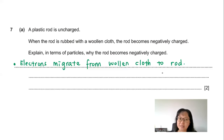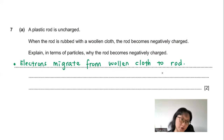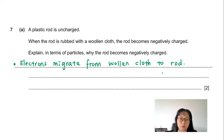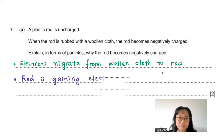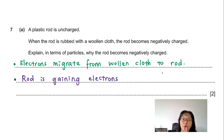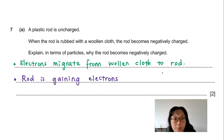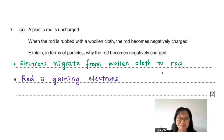Initially, the plastic rod and the cloth have equal numbers of positive and negative charges. When rubbing occurs, some electrons from the woolen cloth move to the rod. As a result, the rod gains more electrons than positive charges, making it negatively charged overall.